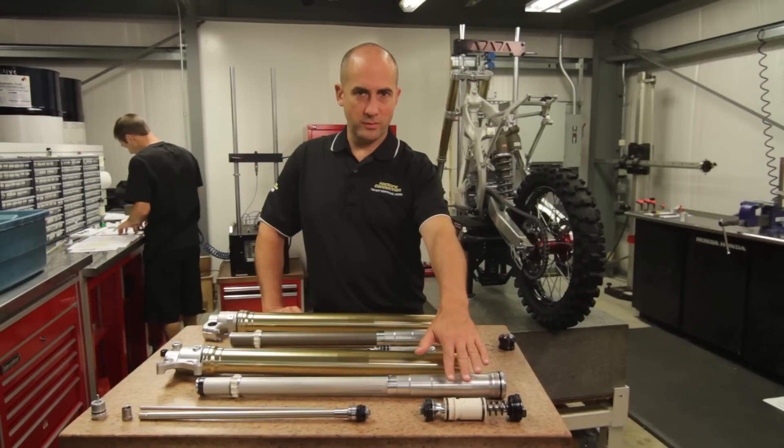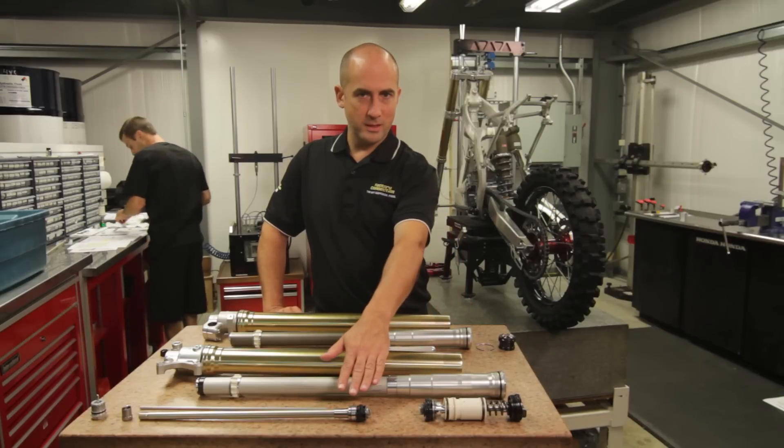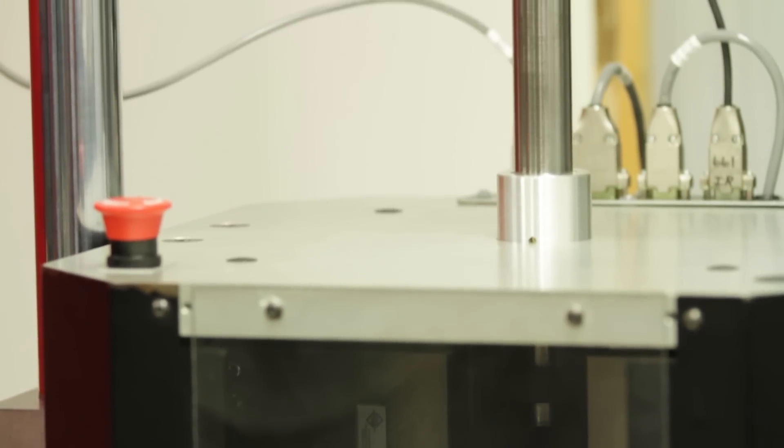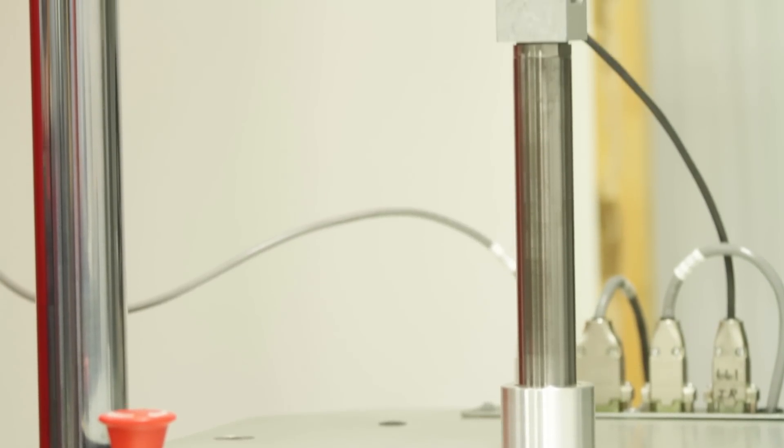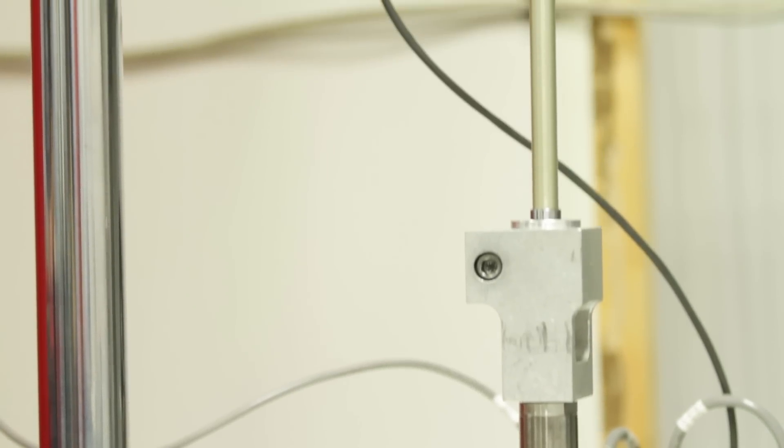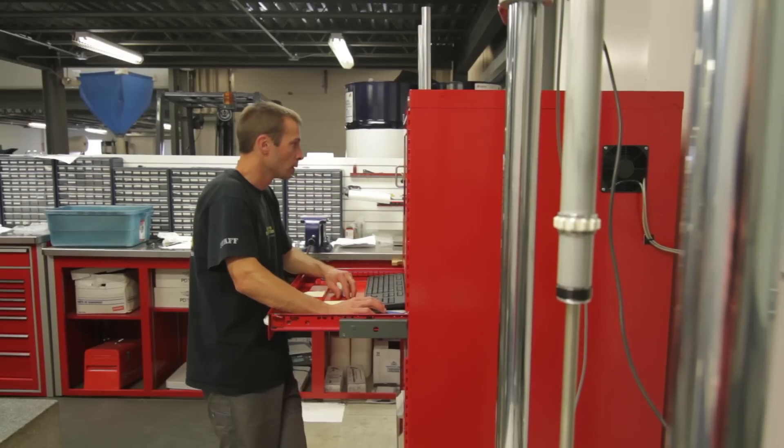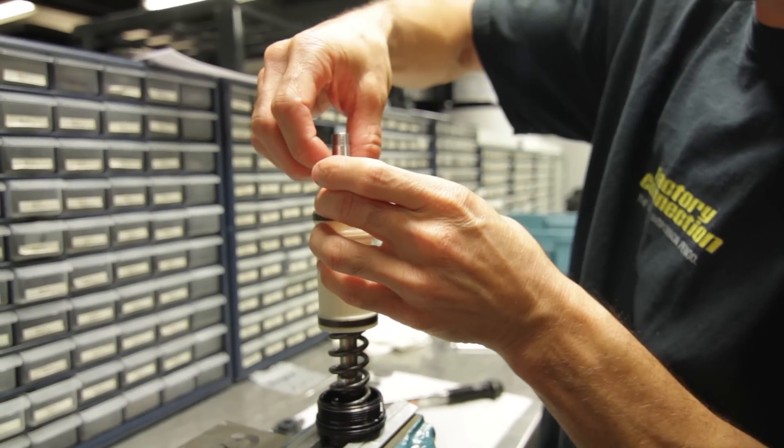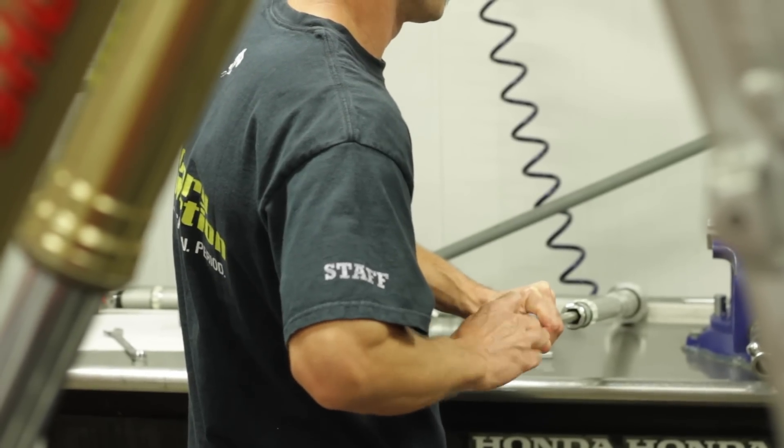We're looking at different valve stacks for the compression assembly, different valve stacks for the mid valve and for the rebound assemblies. We've actually been dynoing the OE setting looking at the intended stock setting and we've learned some things that the fork likes and what the fork is quite good at and we've learned a couple of areas when we start to push things a certain direction where you need to compensate somewhere else.